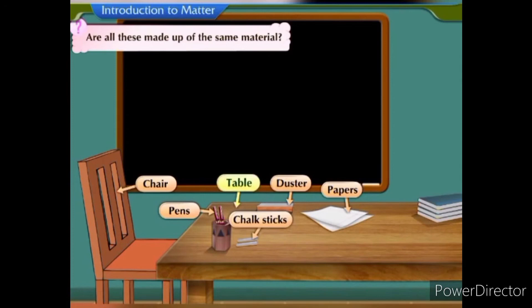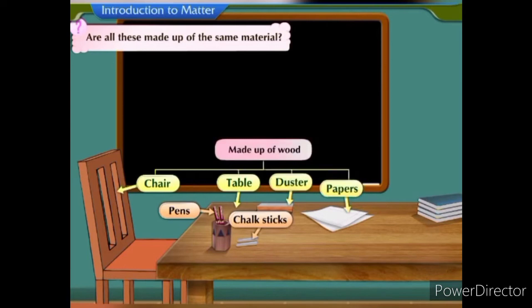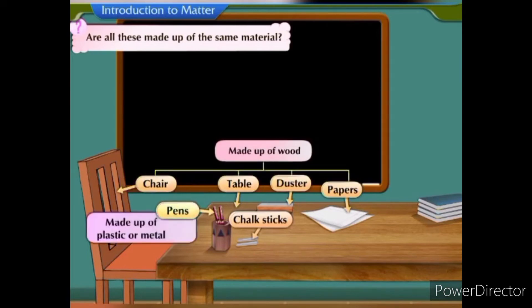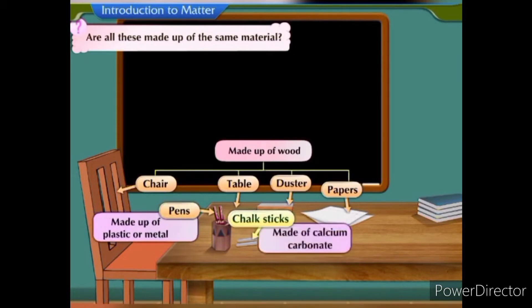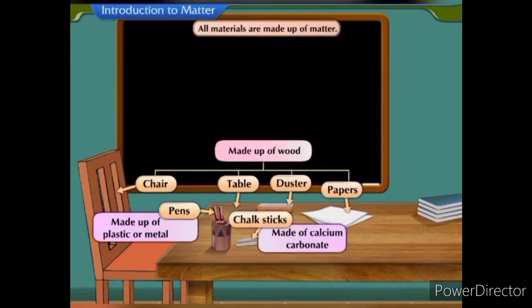Tables, chairs, dusters, and paper are made up of wood. Pens are made up of plastic or metal. Chalk sticks are made of calcium carbonate. All materials are made up of matter.